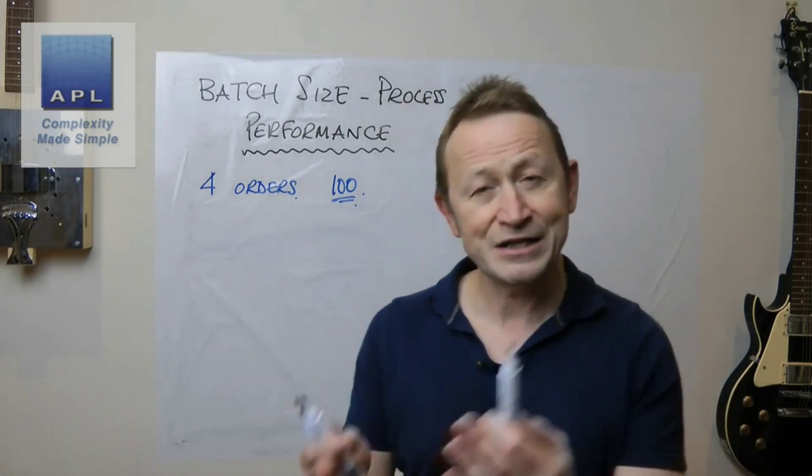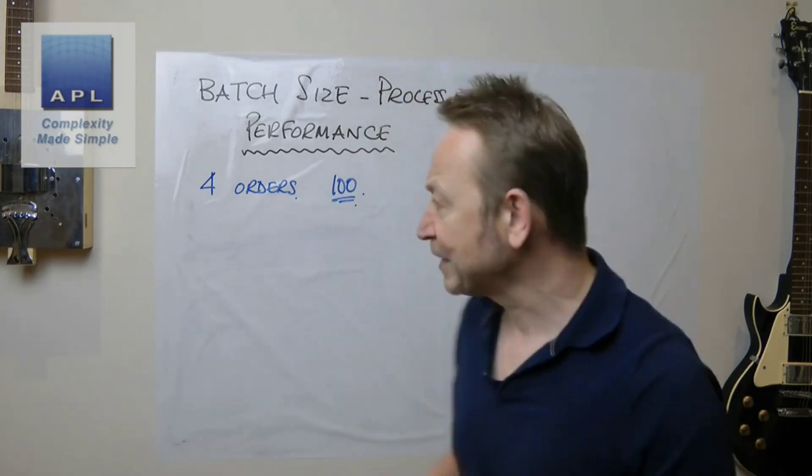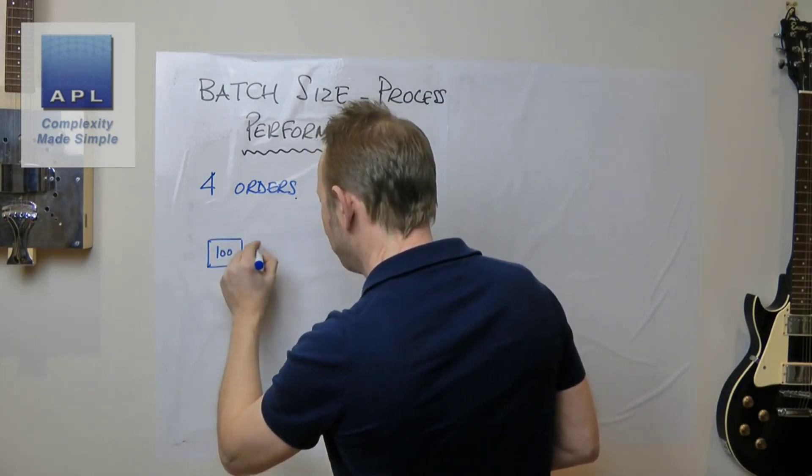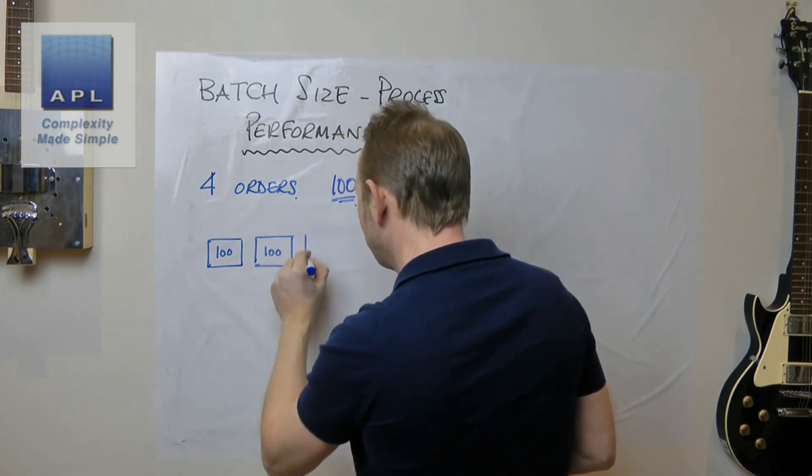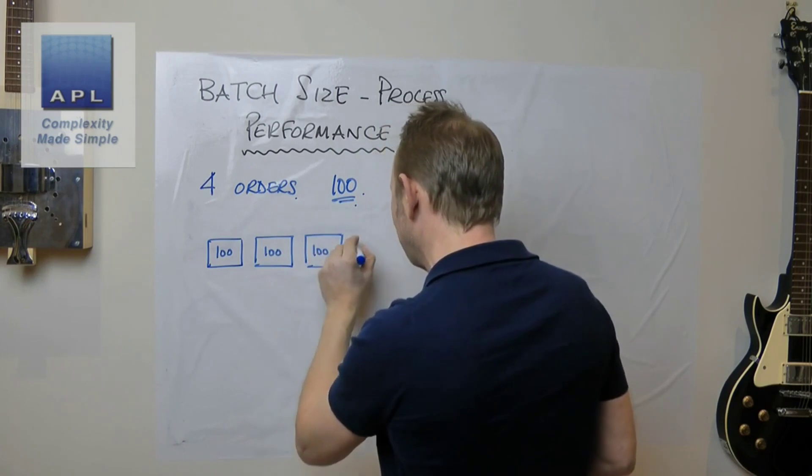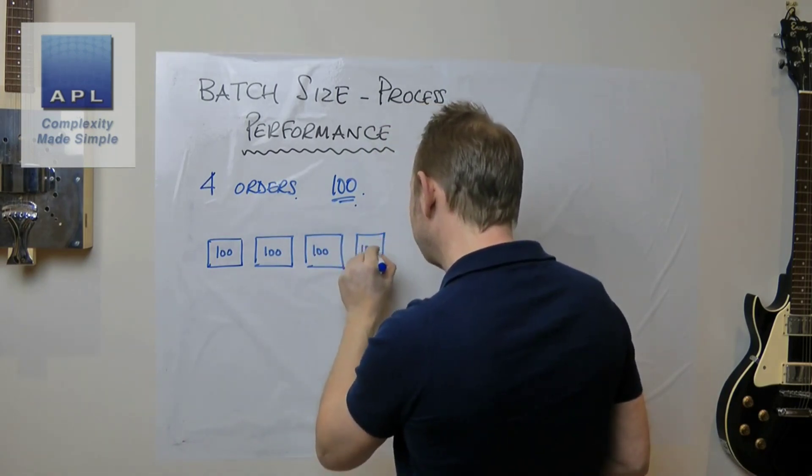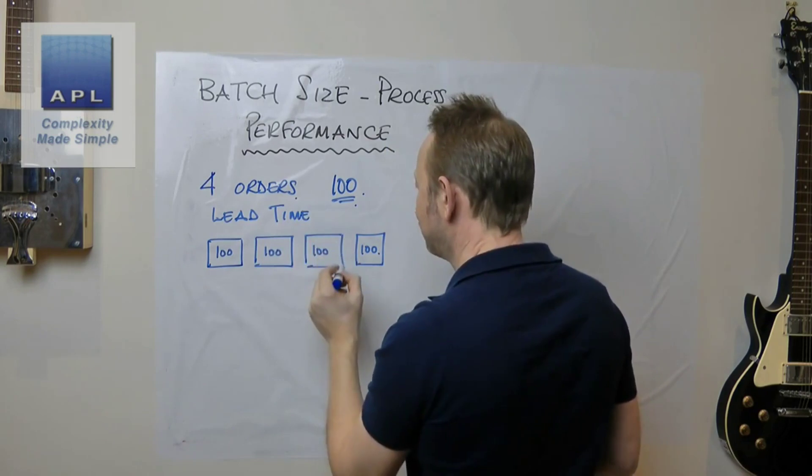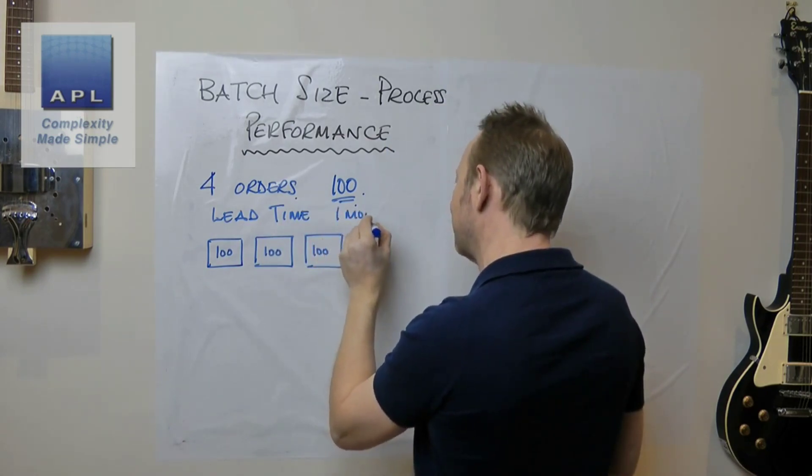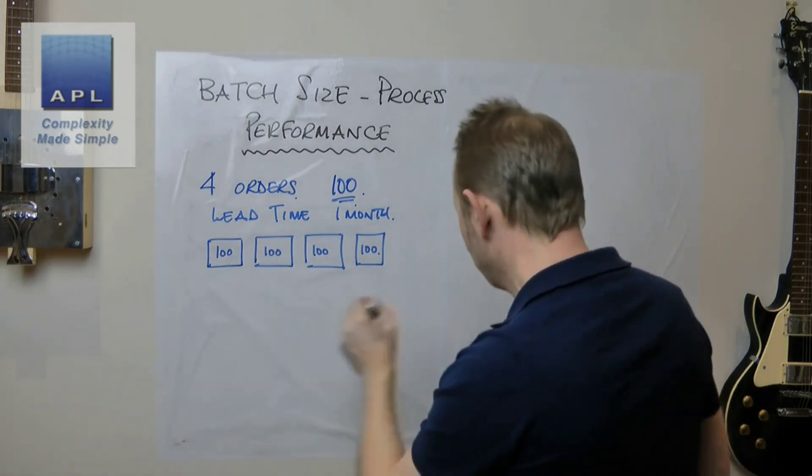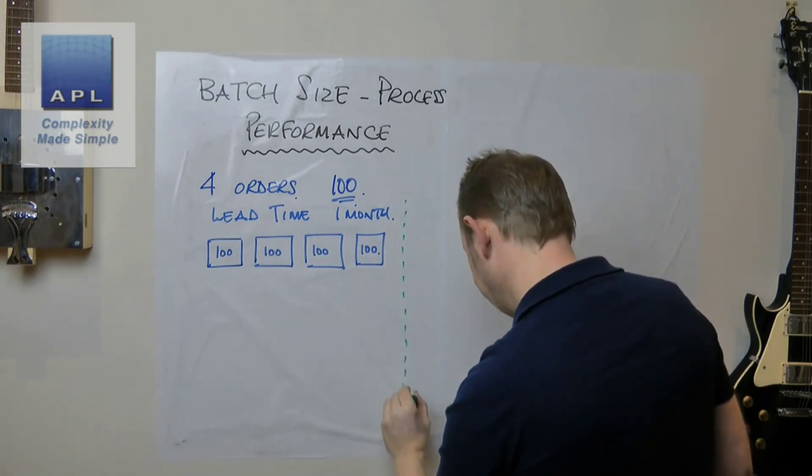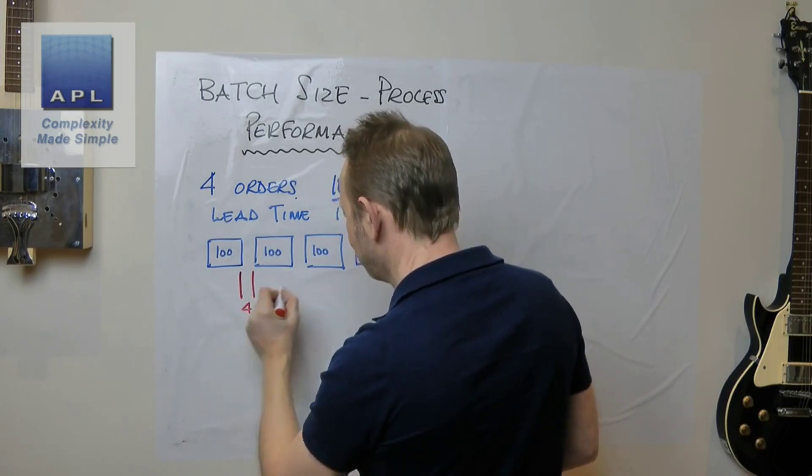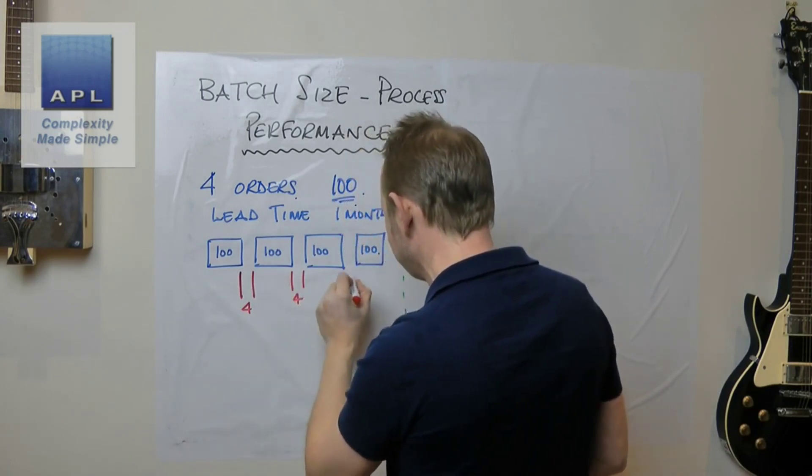They're all for 100. 100 happens to be the current accepted batch size and it is the batch size that we've put in our computer. So what we would normally do is the planning system would generate this situation where the four orders would be produced in batches of 100, one behind the other. We're also going to suggest that we are promising the customer a lead time of one month.